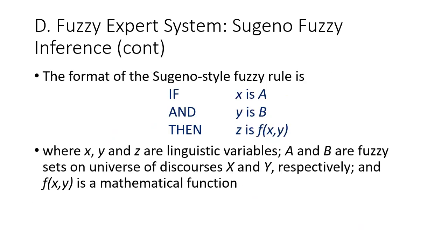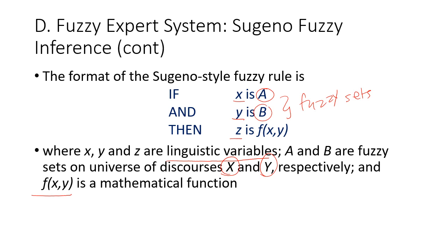The format of Sugeno's style fuzzy rule is: if x is A and y is B, then z is a function of x and y. Here x, y, and z are all linguistic variables, while A and B are fuzzy sets on the universes of discourse of x and y respectively, and the consequent is a mathematical function.